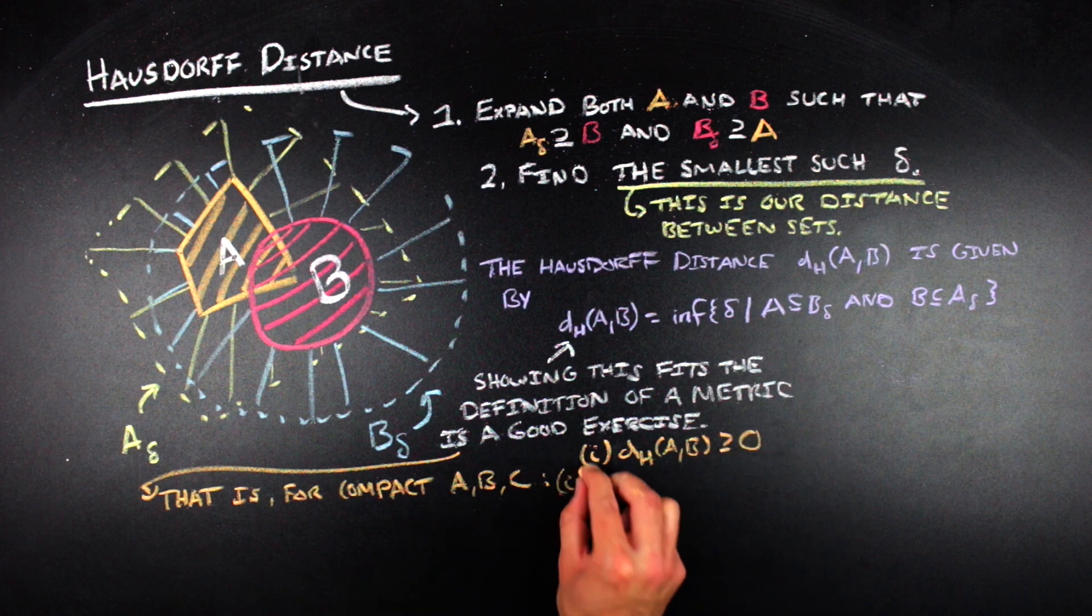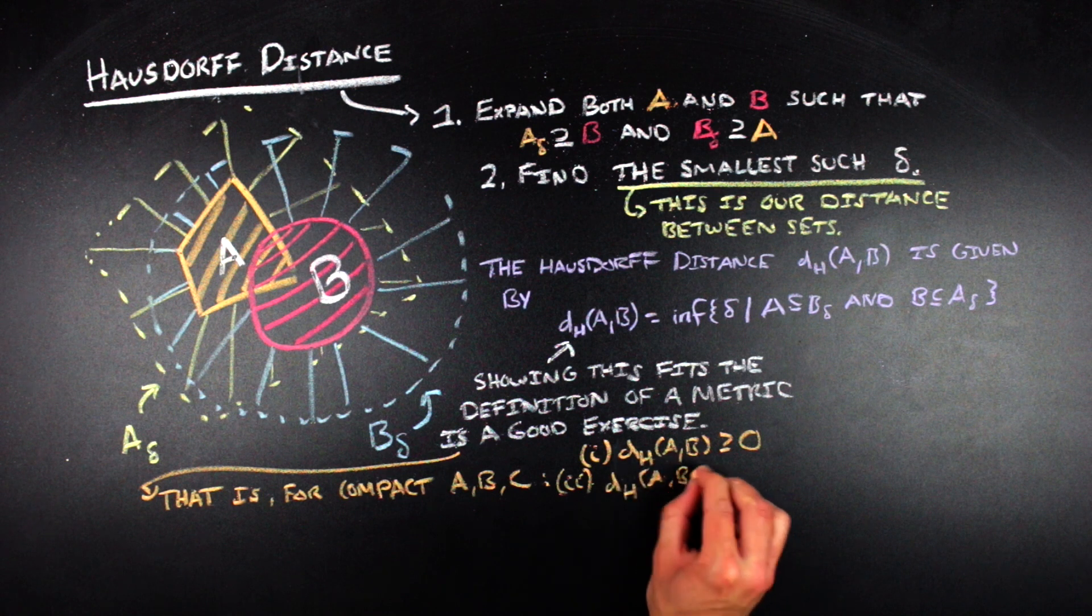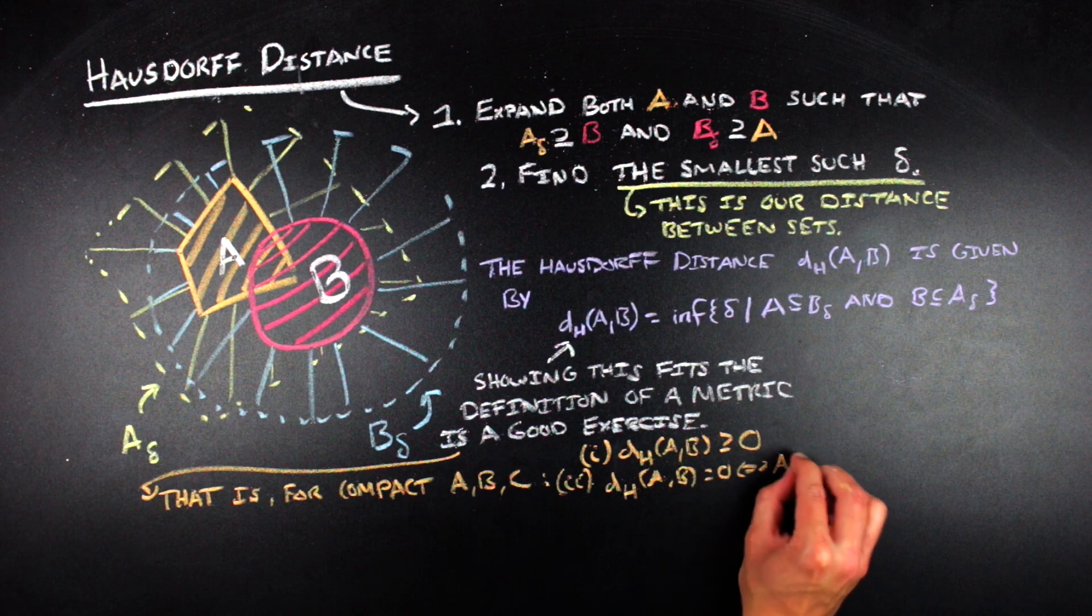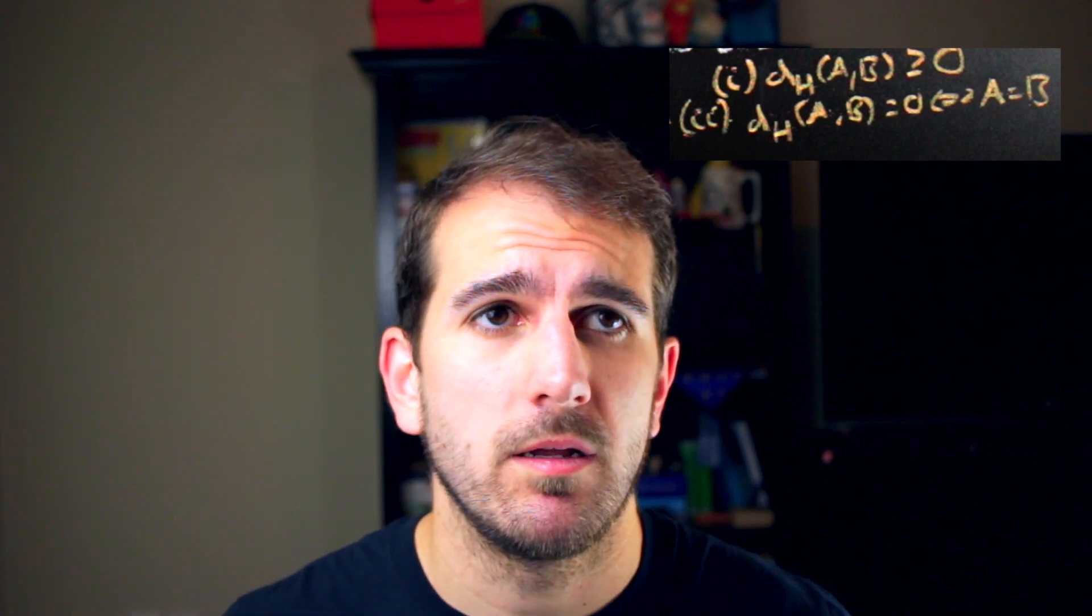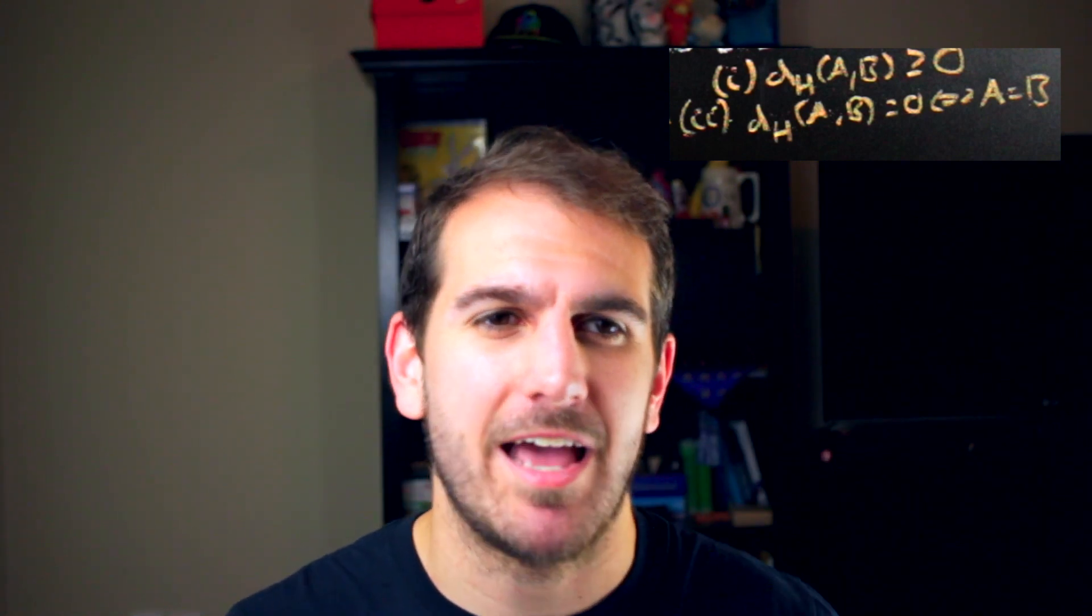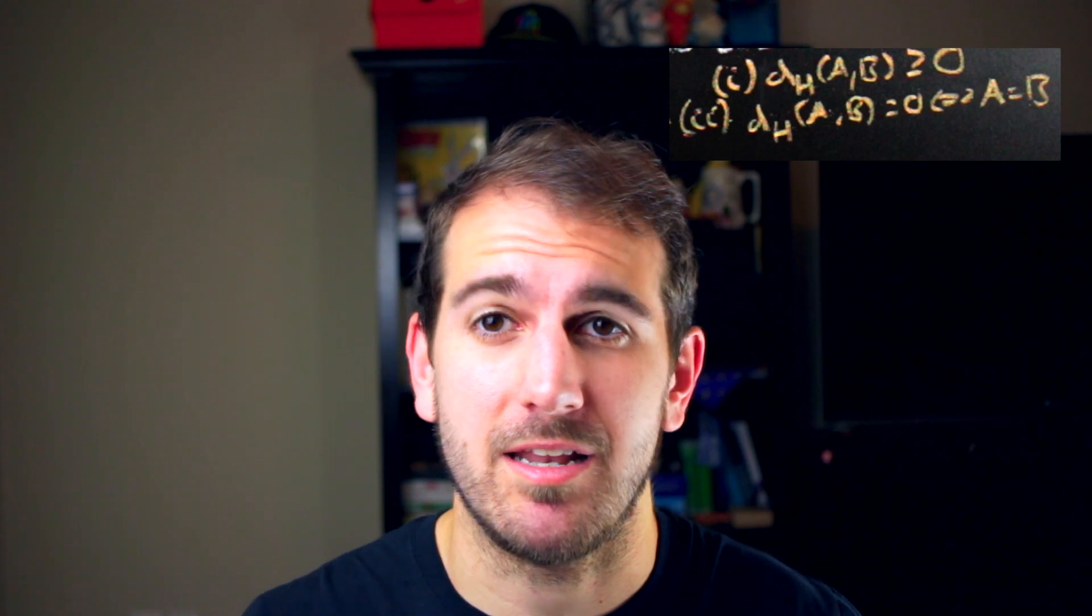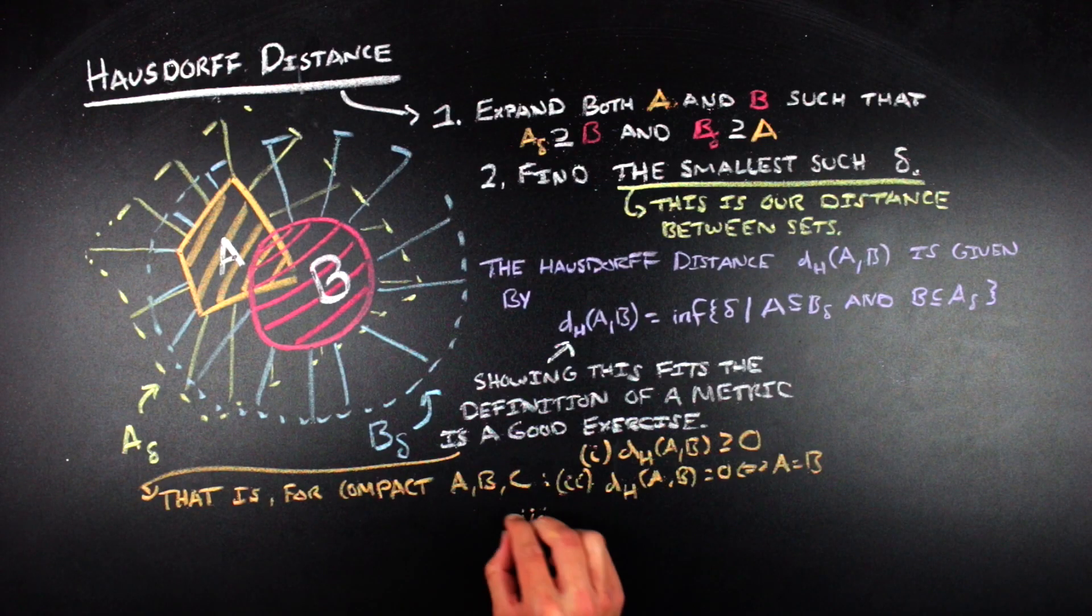So the second metric property, that the Hausdorff distance between A and B is equal to zero if and only if A is equal to B, is something that we've already touched on at least in one direction. And that is, you don't need to expand a set to capture the other set if the other set is just the set that you're trying to expand, which was very wordy, but essentially that's the intuition for it, is that if you take a set and you don't have to expand it to contain the other set, then the set you started with must be equal to the set that you're trying to contain. That didn't help. That was still, like, super wordy, but we're gonna go with it.